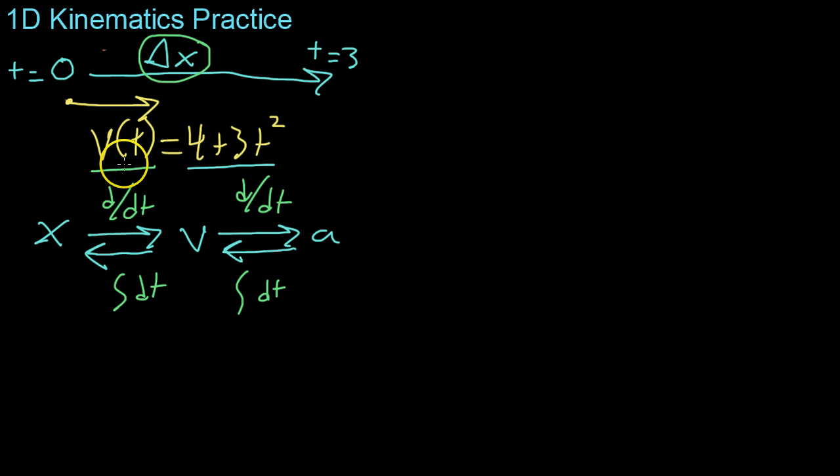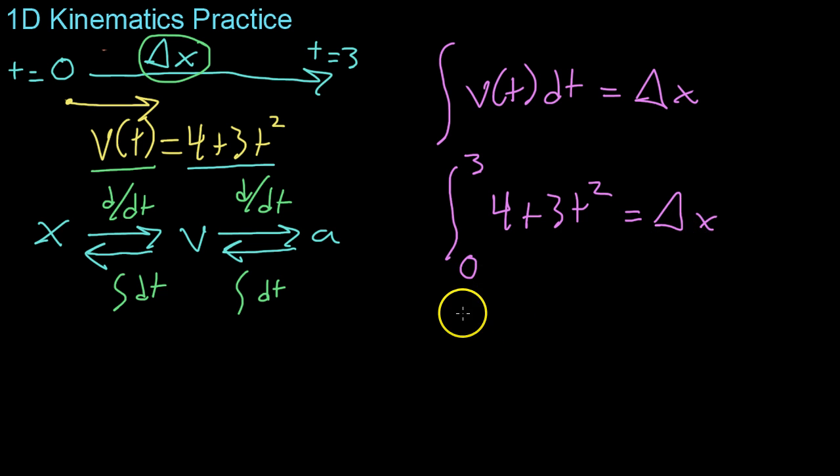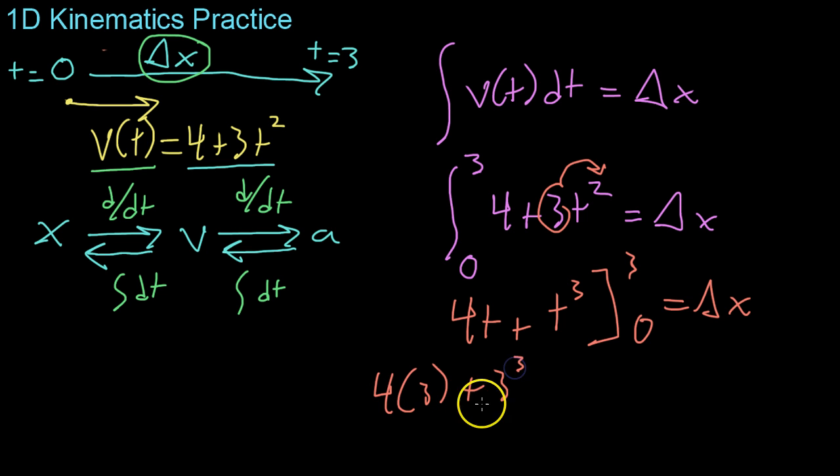So we'll integrate our velocity with respect to time to get our change in x. From here it's just a matter of plugging in values. So we're going from time t equals 0 to time t equals 3, and the function is given by 4 plus 3t squared, all equaling that displacement delta x. Then you just integrate according to what you learned in calculus. So you get 4t plus t cubed from 3 to 0 equals your total displacement, or 4 times 3 plus 3 cubed, which is 12 plus 27, or 39 meters during those 3 seconds.